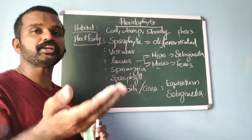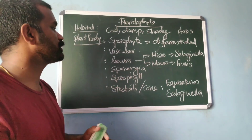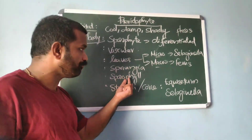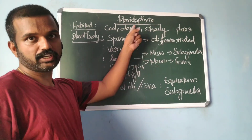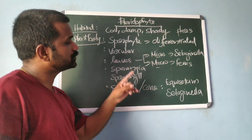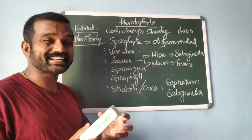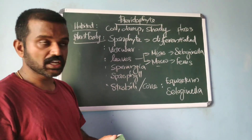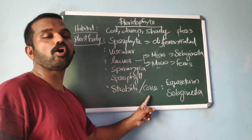Spores are produced inside sporangia, within which spore formation occurs through meiosis. The sporangia-bearing leaves are known as sporophylls. In some pteridophytes, sporophylls form compact structures known as strobili or cones.